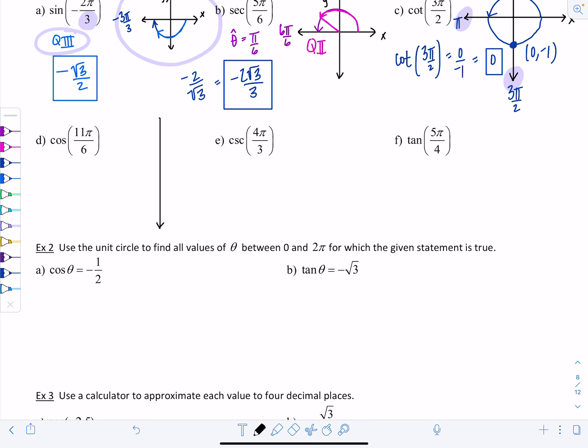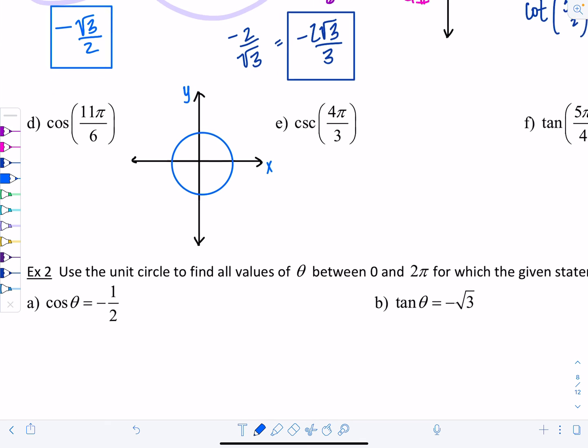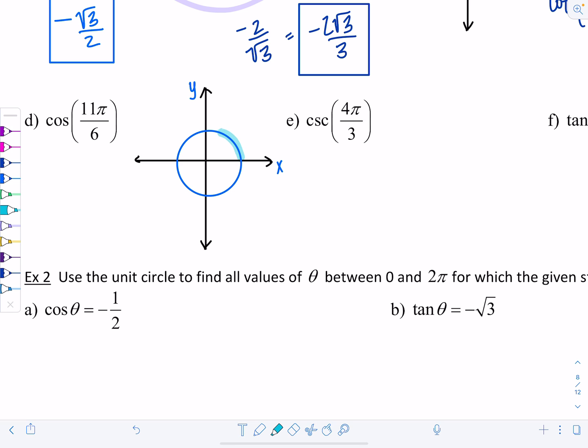Cosine of 11 pi over 6. Which quadrant is 11 pi over 6 in? If it was 12 pi over 6, that would be 2 pi. We're not quite going all the way around. We're stopping right there at 11 pi over 6. The reference angle is pi over 6. The coordinates are rad 3 over 2, comma, negative 1 half. Since we need cosine, it's the x coordinate. Quadrant 4, so x is positive. This is rad 3 over 2.